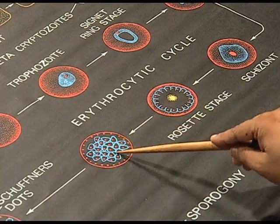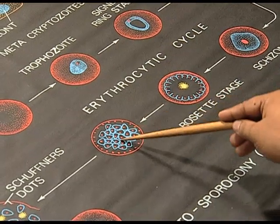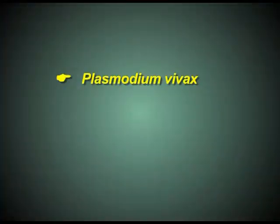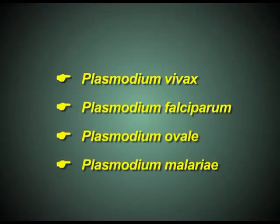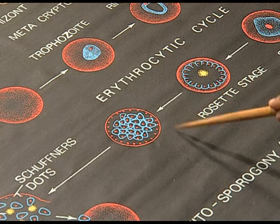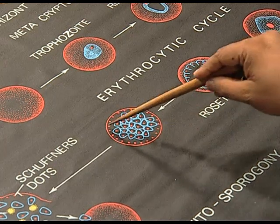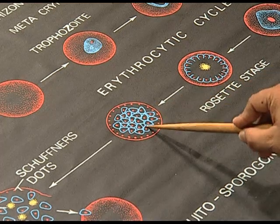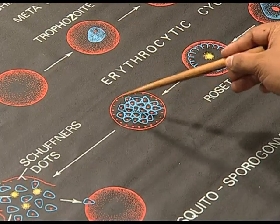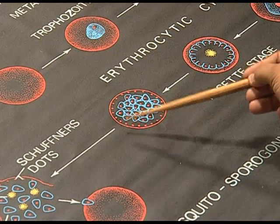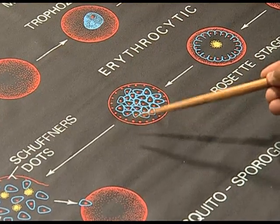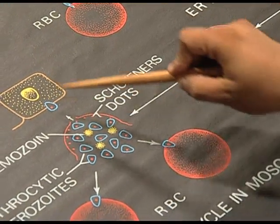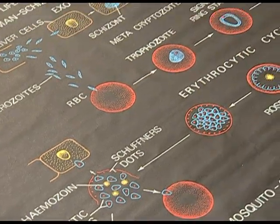After formation of the schizont, we should discuss the different species of Plasmodium. There are four species: Plasmodium vivax, Plasmodium falciparum, Plasmodium ovale, and Plasmodium malariae. Plasmodium falciparum is the deadliest because the number of merozoites present inside the schizont is maximum in this species. When the load exceeds the carrying capacity of the RBC, it gets ruptured, liberating many merozoites, which can again reinfect RBCs, and this erythrocytic cycle continues.